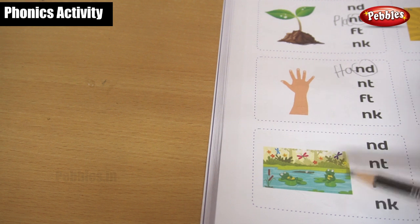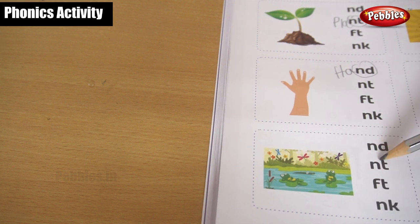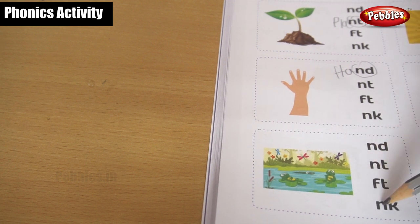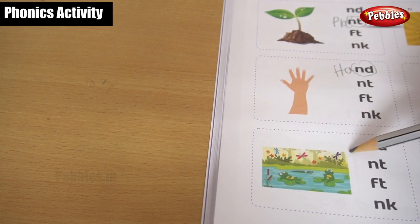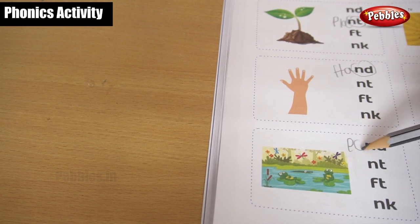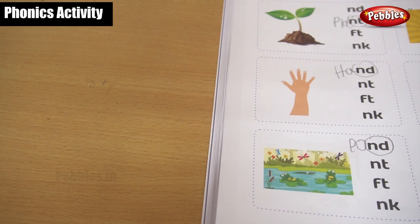Okay, the ending word. End or N-T or F-T or N-K. Pond, pond. Okay, N-D, isn't it? P-O-N-D, pond. Okay, children.